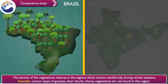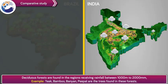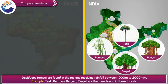Brazil: The density of the vegetation reduces in the regions which receive rainfall only during certain seasons. Examples include various types of grasses, short shrubs, and thorny vegetation. India: Deciduous forests are found in the regions receiving rainfall between 1000 mm to 2000 mm. Examples include teak, bamboo, banyan, peepal, etc.